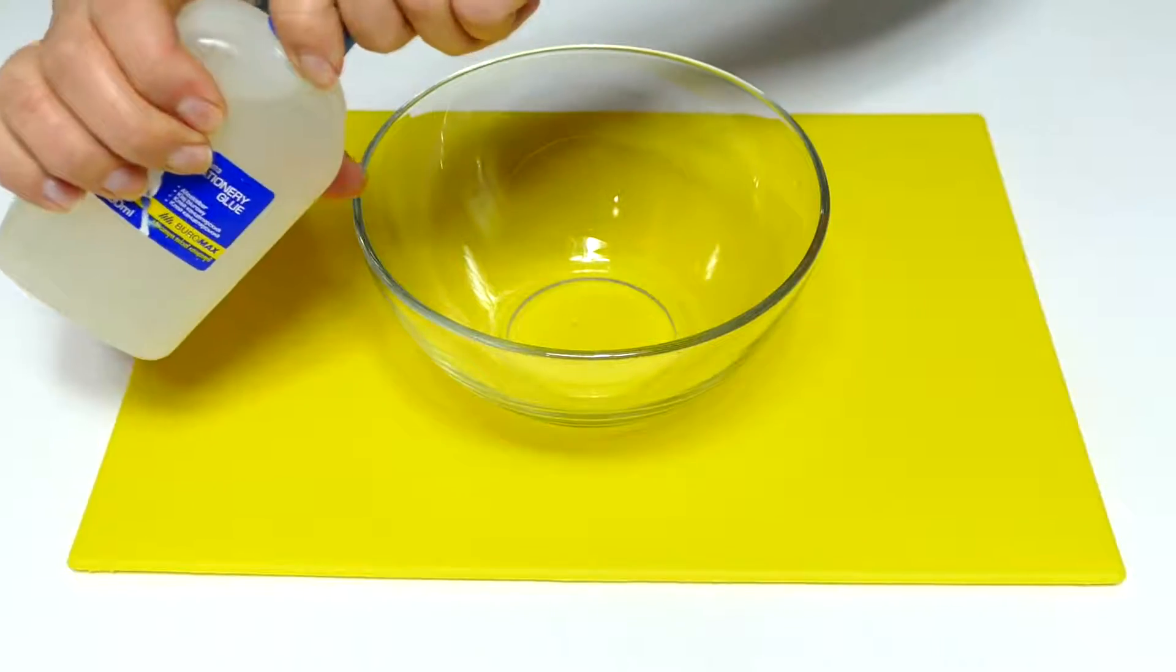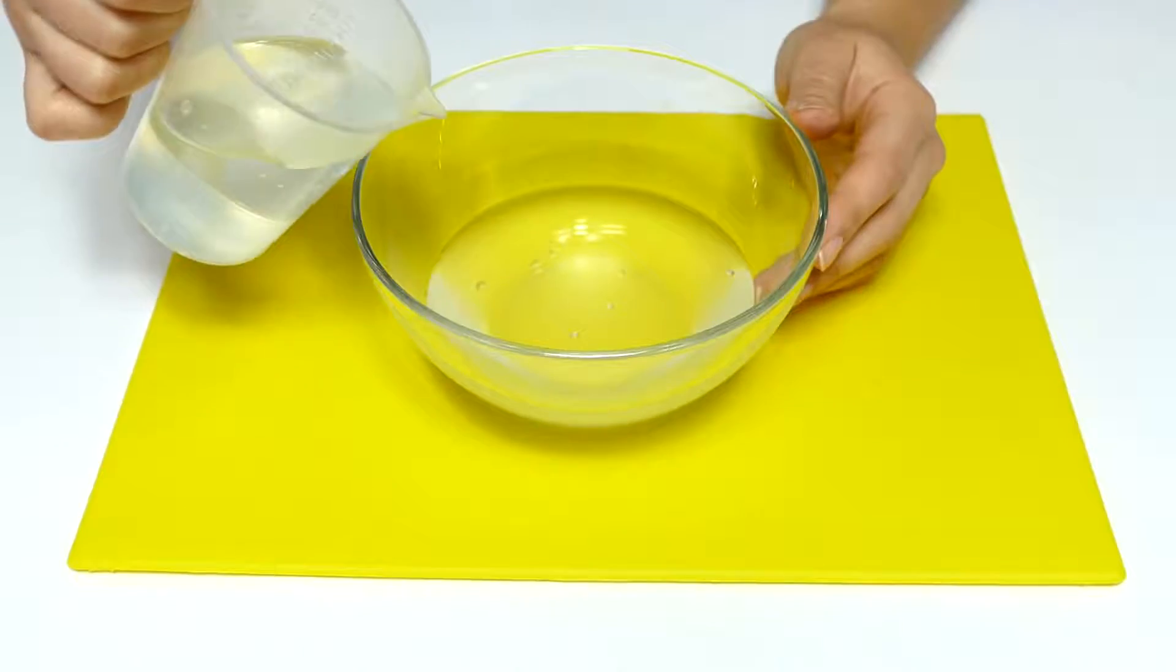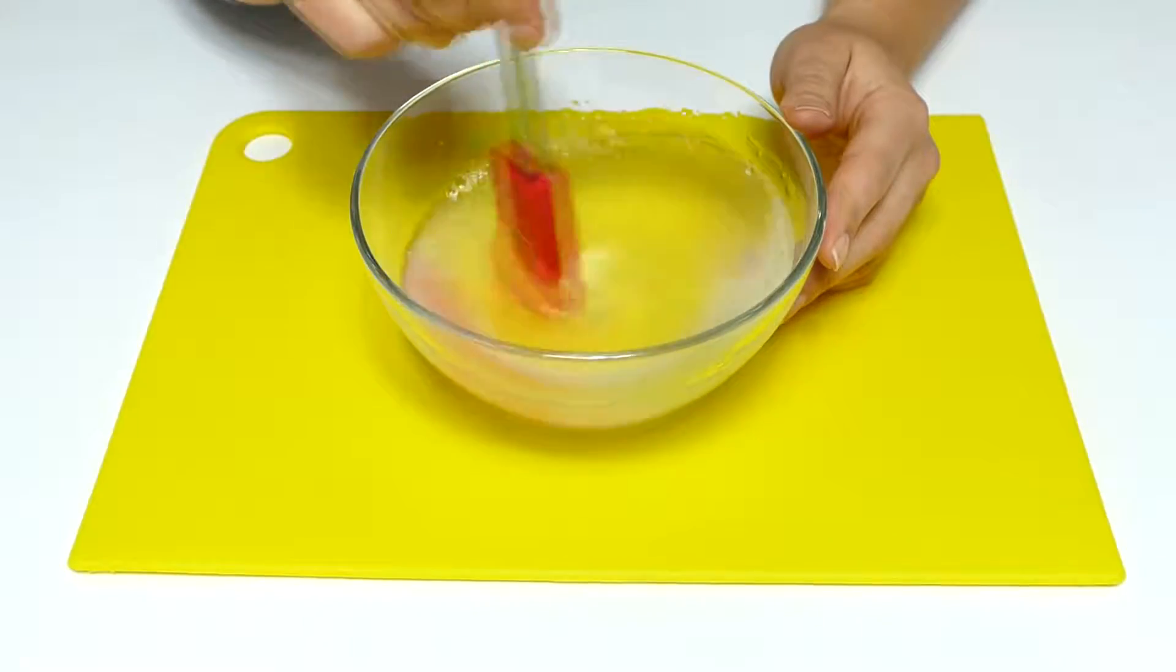Well firstly we'll take clear glue and pour out 200 milliliters into a bowl. Then add 150 milliliters of water and mix it well.